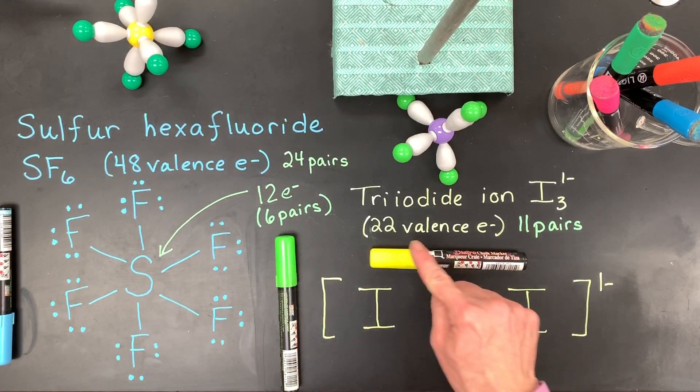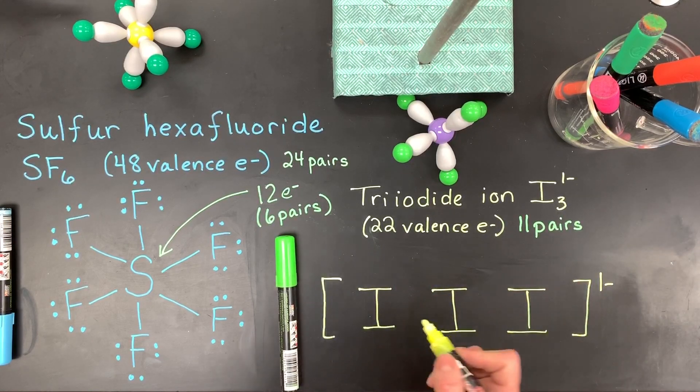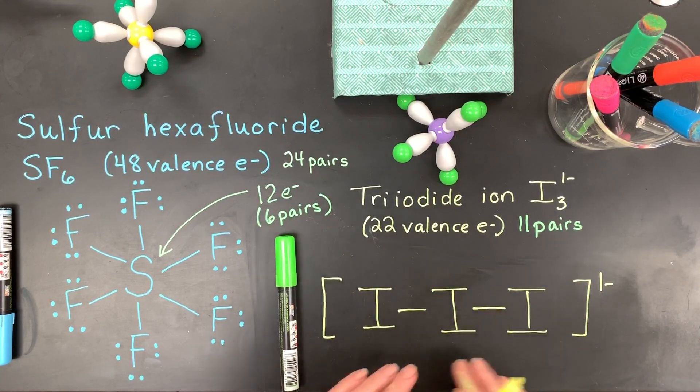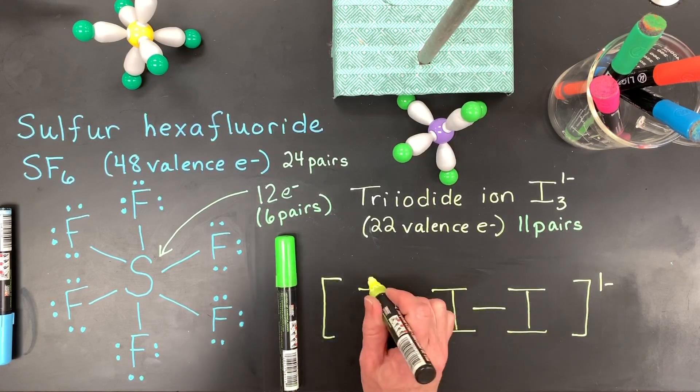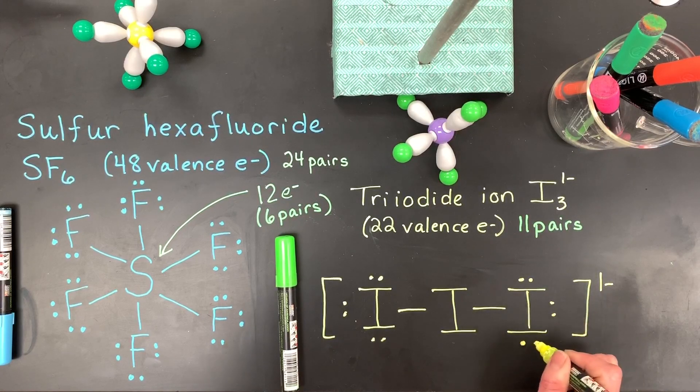Which again is much higher than the octet rule in this case. Then the next thing is the triiodide ion. I thought I'd work this one with you. 22 valence, 11 pairs. So the first thing you're going to do is connect those three iodines together. Halogens typically have three pairs of lone pairs. So after I've placed those lone pairs.